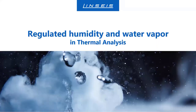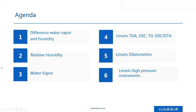The topic today is regulated humidity and water vapor in thermal analysis. We will start with the differences between water vapor and humidity, then I will show you how relative humidity works with some application examples, the same with water vapor. Then I will tell you in which instruments humidity and water vapor generators can be attached — in the field of thermal analysis: TGA, DSC, simultaneous DSC/TGA, dilatometers, and also high pressure instruments.